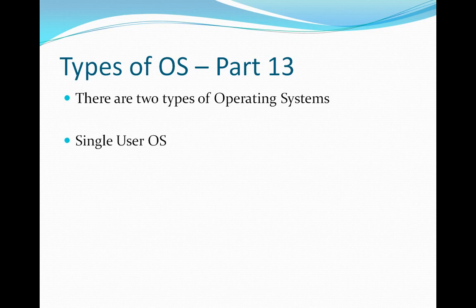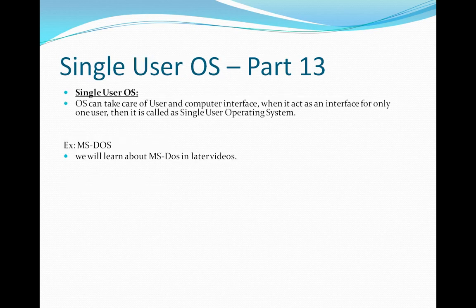A single-user operating system acts as an interface for only one user. If a single user is working on a particular system, then it is called a single-user operating system, and that system is not accessed by any other user. An example of a single-user operating system is MS-DOS.